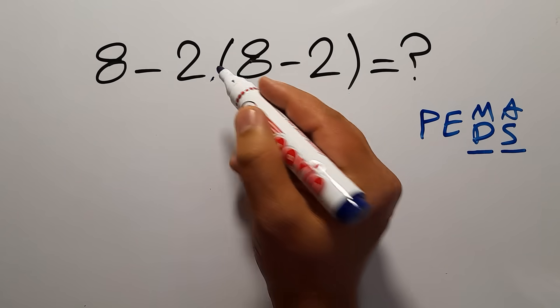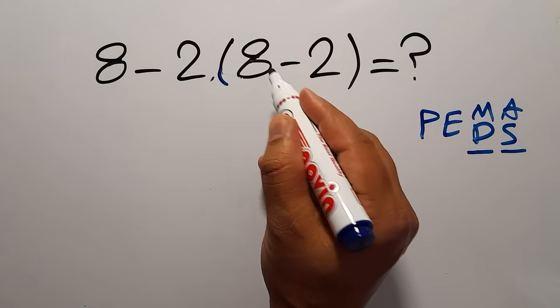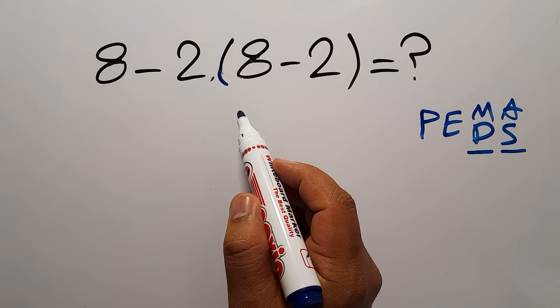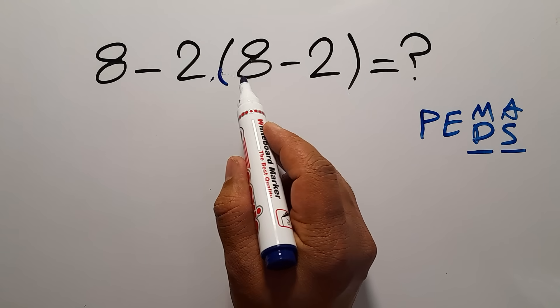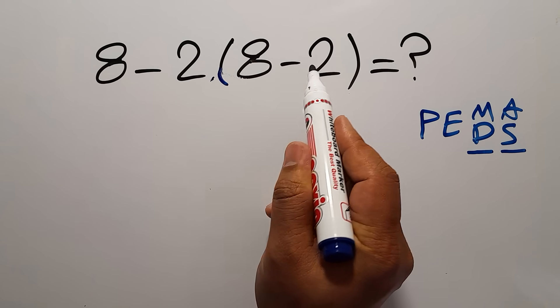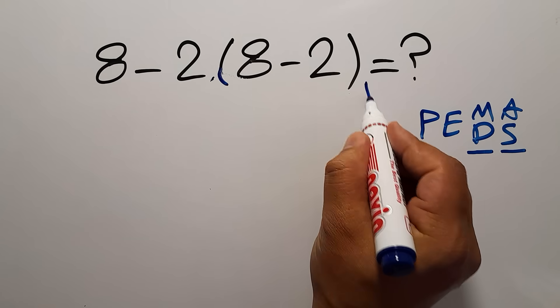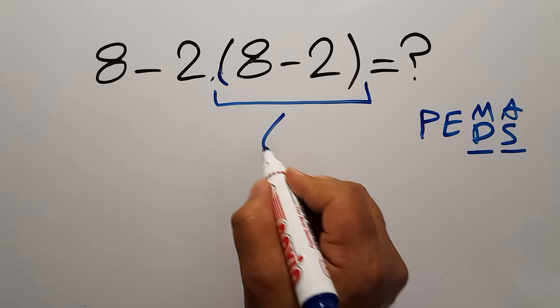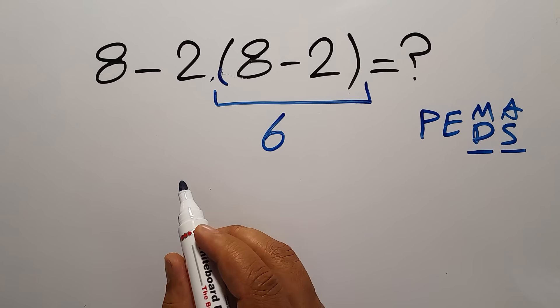So first, this parentheses. Inside this parentheses, we have 8 minus 2, which equals 6.